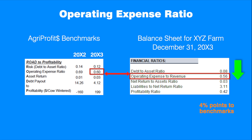The operating expense to revenue ratio is a financial efficiency indicator that shows the portion of operating expenses covered by the fiscal year revenue. To have sufficient cash, a producer needs to have this ratio less than one. In our example, the operating expense to revenue ratio is 0.56, which tells us that 0.56 of every dollar of revenue will be spent to cover operating expenses. The remaining 0.44 is available for debt servicing, reinvestment in assets, and family living withdrawals. This value is slightly lower than the AgriProfits benchmark by four percentage points, indicating a relatively good cash position.